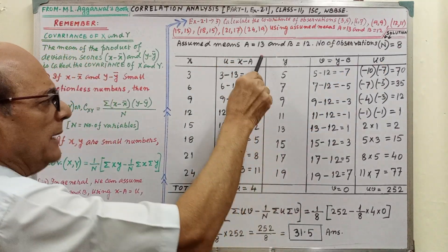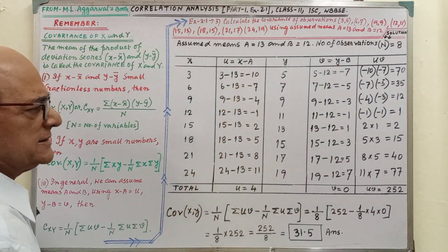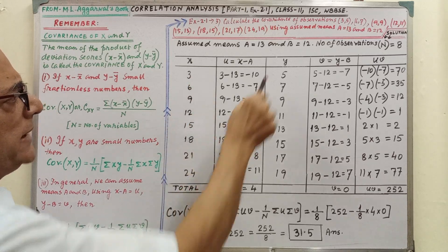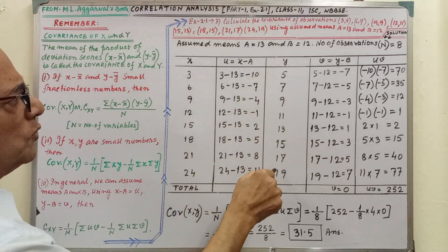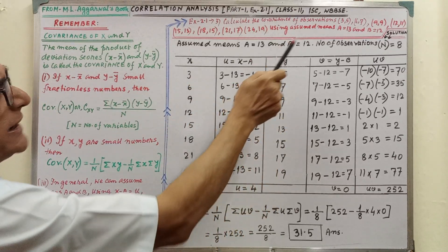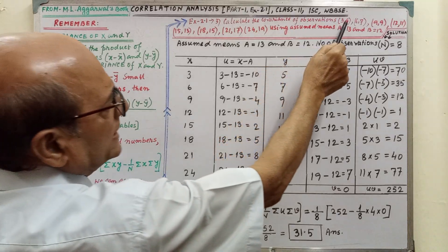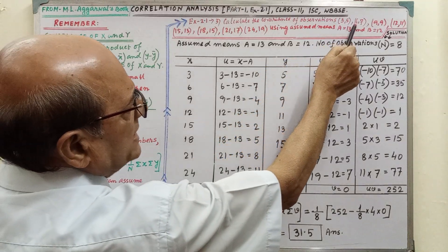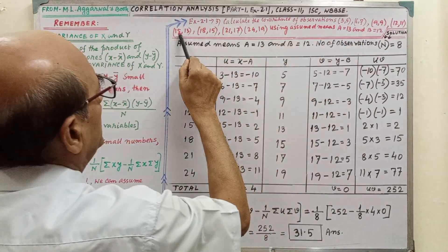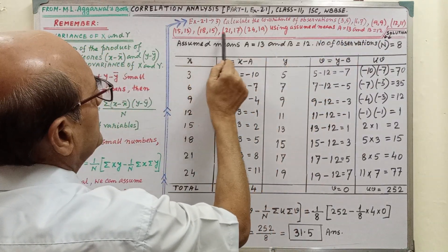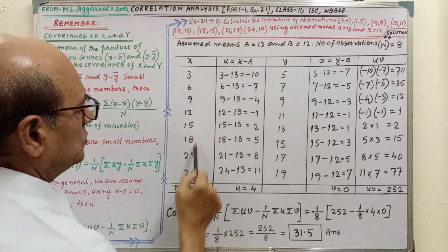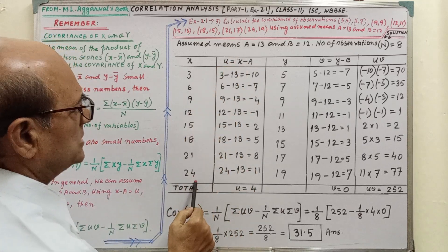Now we have to make this table. This column is for x coordinate and this is for y coordinate. The x coordinates are 3, 6, 9, 12, 15, 18, 21, 24. We have to write them in this way.